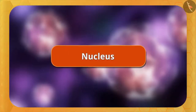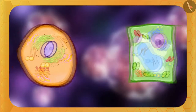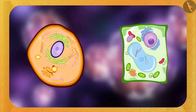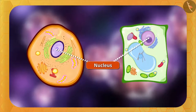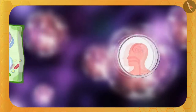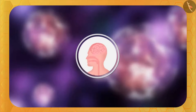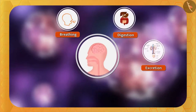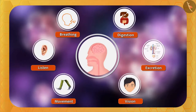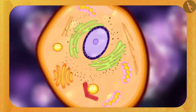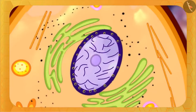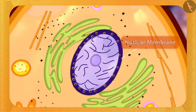Now let's understand the nucleus. In both plant and animal cells, there is a spherical structure in the center — that is the nucleus. It is the control center of the cell, just as the brain directs and controls all processes in our body such as breathing, digestion, excretion, vision, and movement. Similarly, the nucleus directs and controls all cellular processes. If we zoom into the nucleus, it is spherical in shape. Its outer structure is a two-layer membrane called the nuclear membrane, which keeps the contents inside the nucleus separate from other parts of the cell.